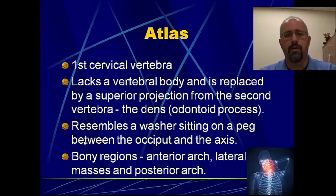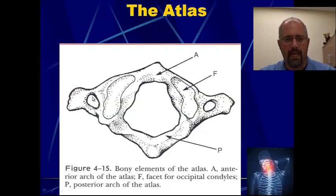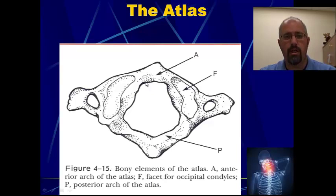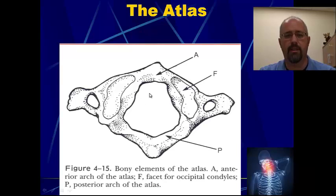So the dens or the odontoid process from C2 projects upwards into the space where the body of C1 should be. C1 technically is kind of like a washer that sits on top of a peg, between the occiput and the axis. It doesn't have a body — what it actually has is an anterior arch, lateral masses, and a posterior arch — front, back and two sides. Where the body of the vertebrae should be in this position right here is where the odontoid peg sits, held tightly by ligaments to keep stability between C1 and C2.